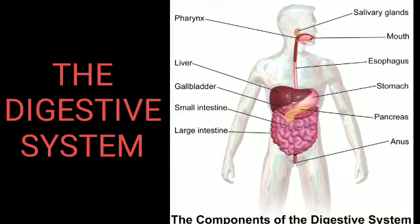Stomach is the widest sac-like part of the alimentary canal. It has gastric glands that secrete gastric juice. It contains hydrochloric acid, pepsin and mucus. Food is churned and made acidic in the stomach. Some proteins are digested here. Churning and the action of gastric juice makes a slurry from food, which then goes into the small intestine.